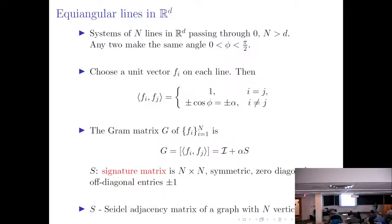This has a connection to graphs, which we will not discuss in this talk, but it's worth mentioning. You can think of the signature matrix as the adjacency matrix of a graph having n vertices, where the (i,j)-th entry is negative 1 if the i-th and j-th vertices are adjacent, and 1 if they are non-adjacent. There is a strong connection between systems of equiangular lines and graphs.